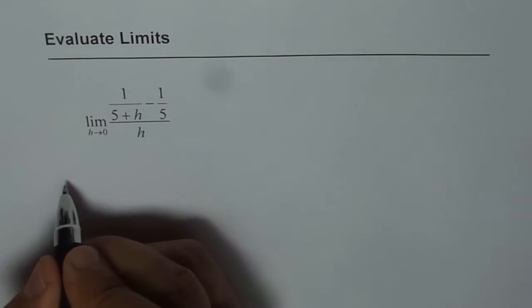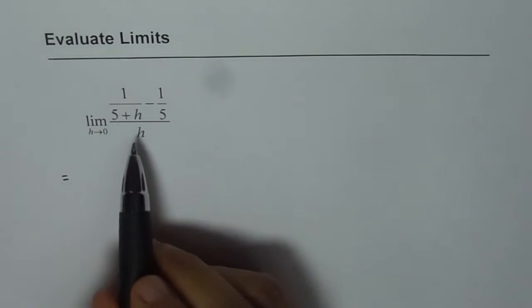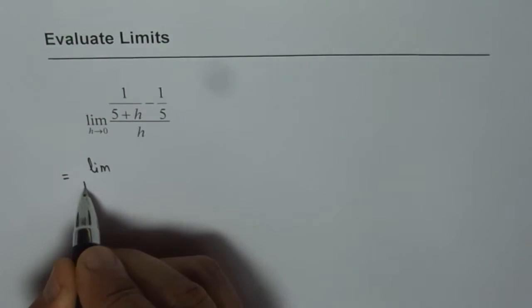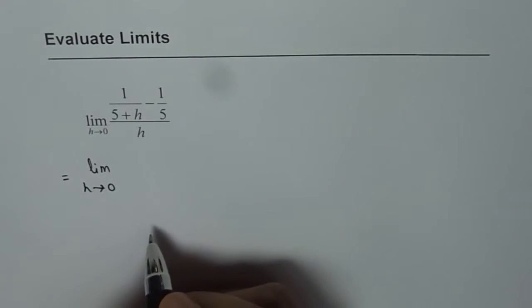Evaluate the limit of (1/(5+h) - 1/5)/h as h approaches 0. For such a function, I would appreciate if you could first simplify it. So let's simplify this expression first and then figure out the limit.